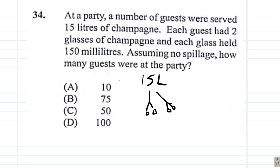Now each guest had two glasses, and each glass held 150 milliliters, so it's 150, 150. So each guest got how many milliliters? 300. Two times 150, each of them got 300 milliliters.